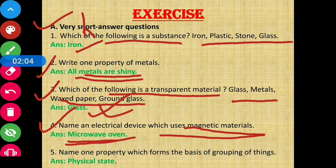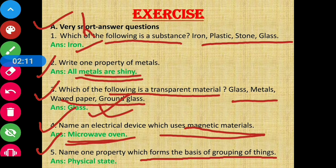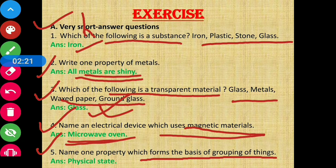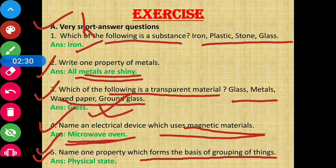Question number 5: Name one property which forms the basis of grouping of things. Grouping of things can be done based on many properties, as we have learnt in our previous videos. The answer is physical state.